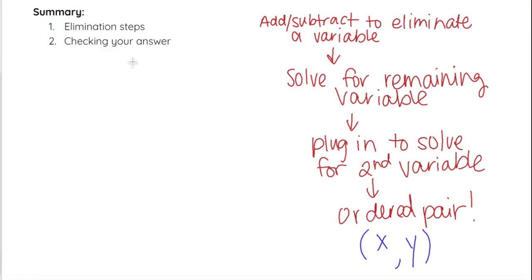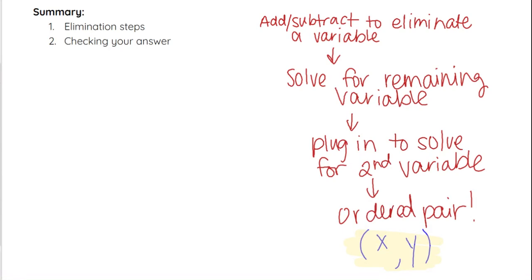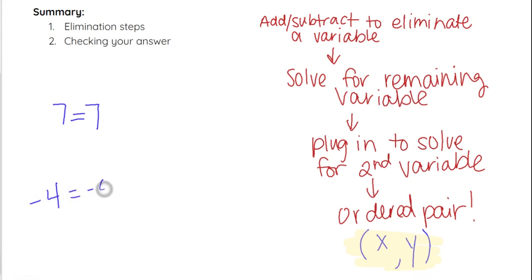Just a reminder for checking your answer: you can plug that x, y ordered pair back into both of the original equations. If you plug it back into both original equations, you should get a true statement out of each of them — for example, you should end with something like 7 equals 7 or negative 4 equals negative 4 when you plug the x and y back into each of those two equations.